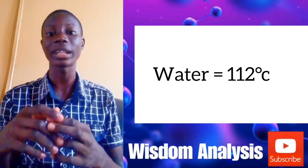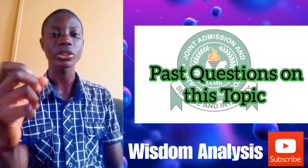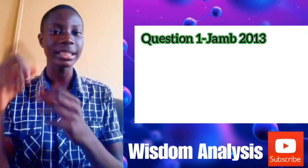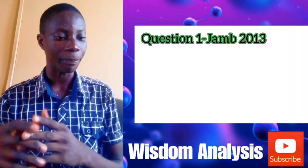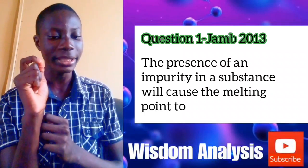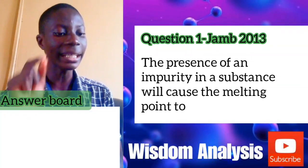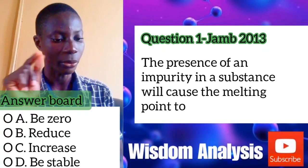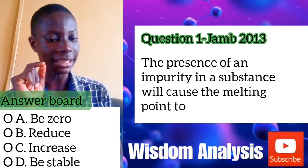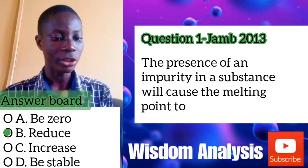Let's look at past JAMB questions on this topic. Question 1 from JAMB 2013: the presence of an impurity in a substance will cause the melting point to — (a) be zero, (b) reduce, (c) increase, or (d) be stable. The answer is (b) reduce, because impurities lower the melting point.